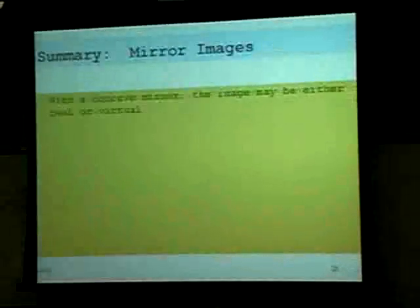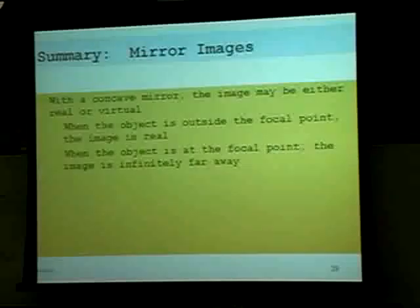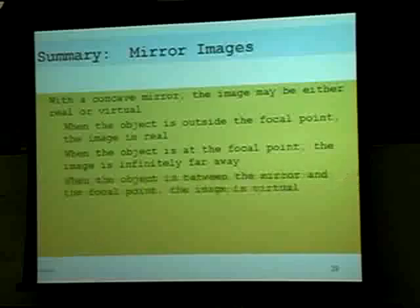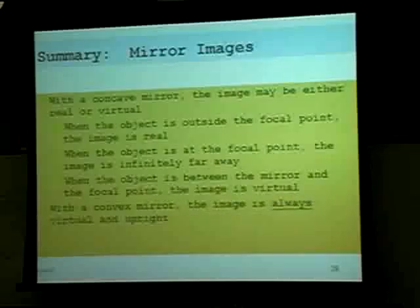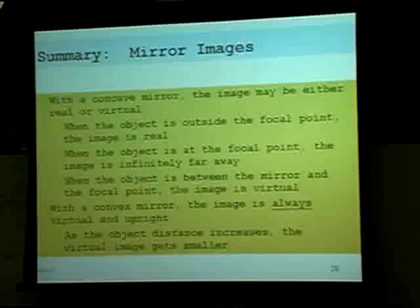Summary: for a concave mirror, the image may be real or virtual. If the object is beyond the focal point, the image is real. When the object is at the focal point, the image is infinitely far away. When the object is between the mirror and focal point, the image is virtual and behind the mirror. For a convex mirror, the image is always virtual and upright. A convex mirror would be a good thing to have in a store — you can always see what's going on.